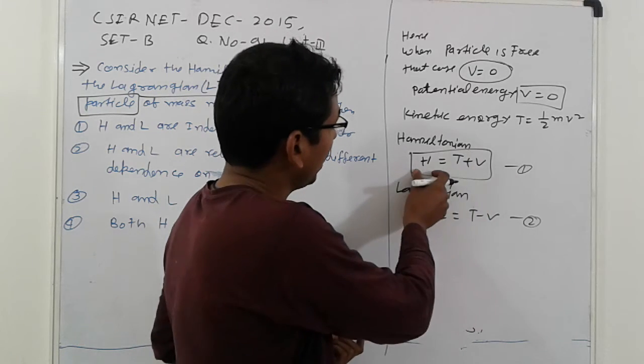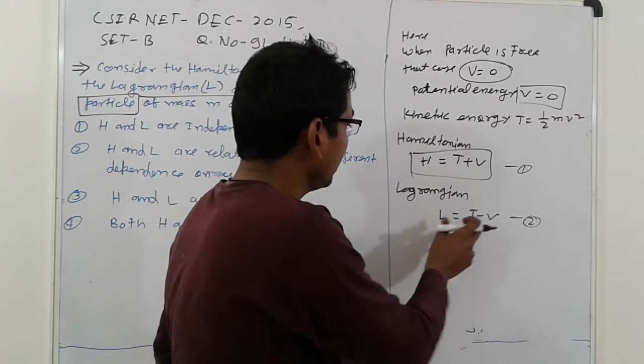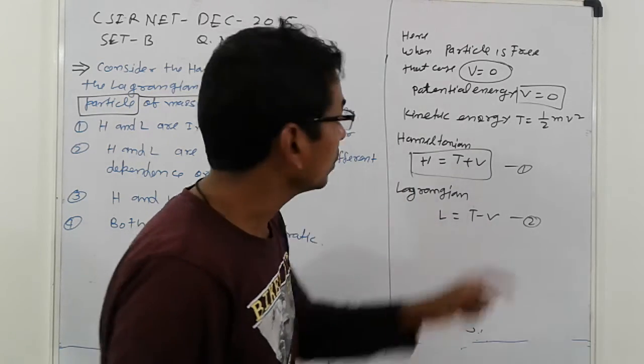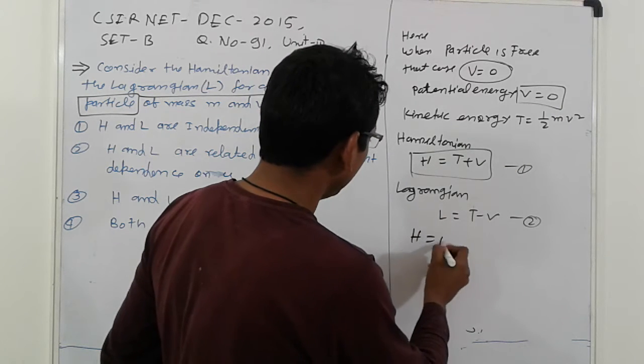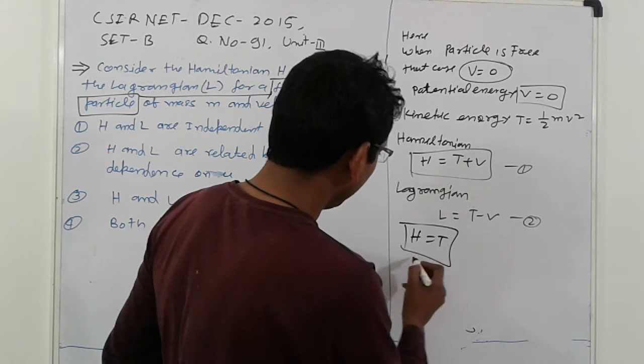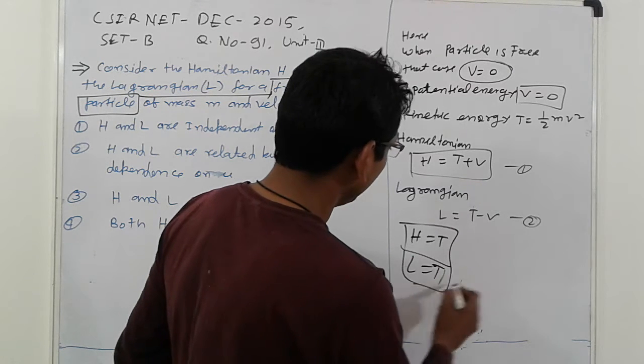So potential energy—Hamiltonian is equal to T plus V. It is a formula. And here Lagrangian is T minus V. So in that case V is zero. So here H is equal to T, and L is equal to T. L is also T.